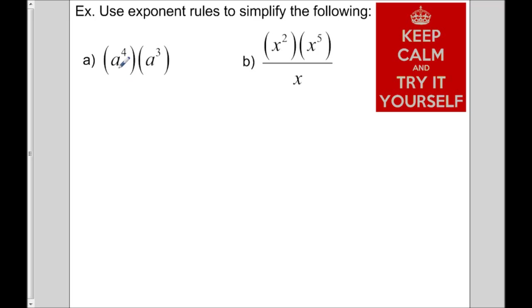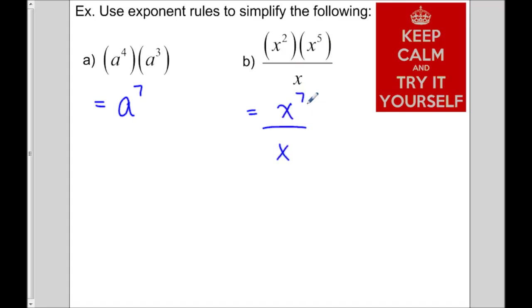For question A, these two powers are multiplying, so we add the exponents — that should be A to the 7. For B, in the numerator the powers are multiplying, so we add: that's X to the 7. Divided by X to the 1 — we'll put the 1 there to clarify. They're dividing, so we subtract the exponents: that should be X to the 6.